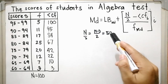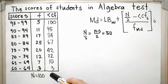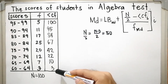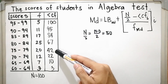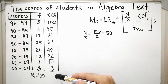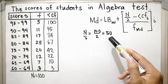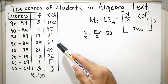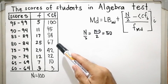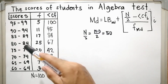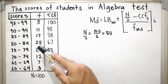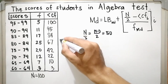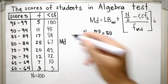If we locate 50 in the less-than cumulative frequency column, it is not included in 3, 10, 22, or 42 since these are all less than 50. Therefore 50 is included in 67, so the median class interval is 80 to 84 with a frequency of 25.